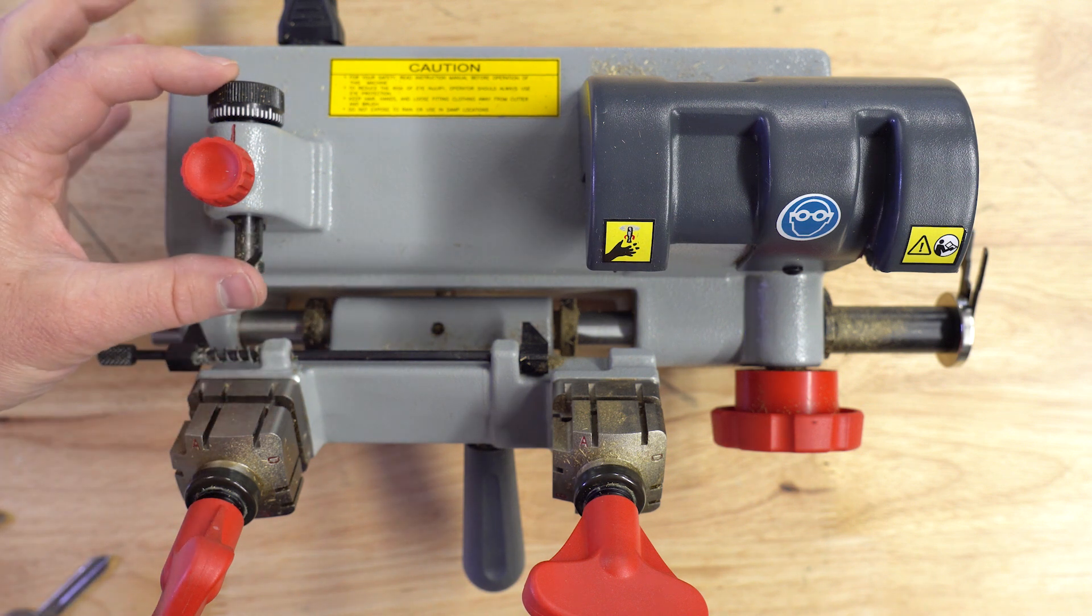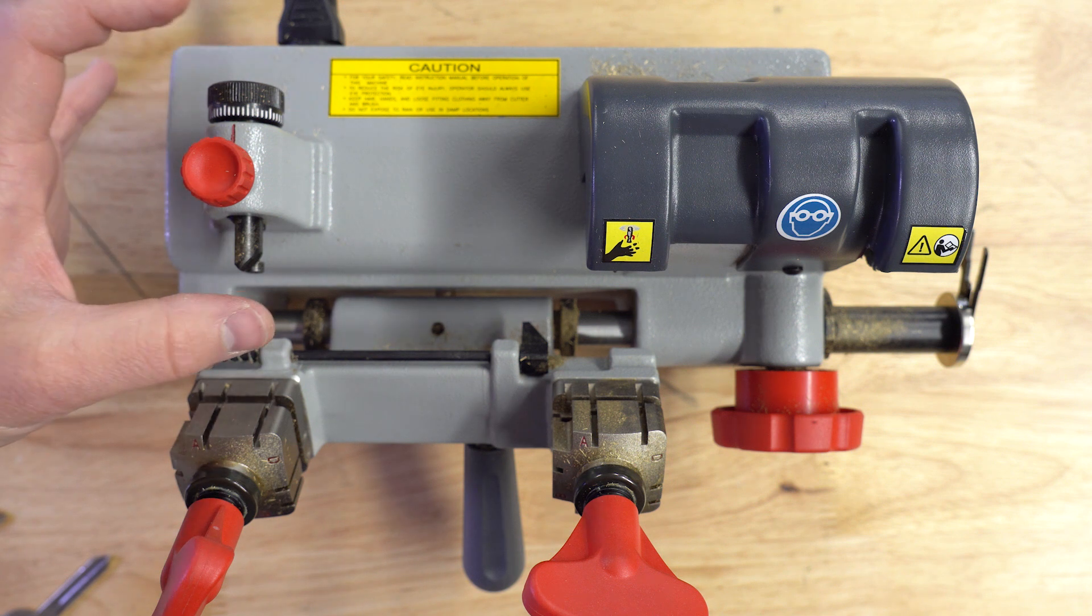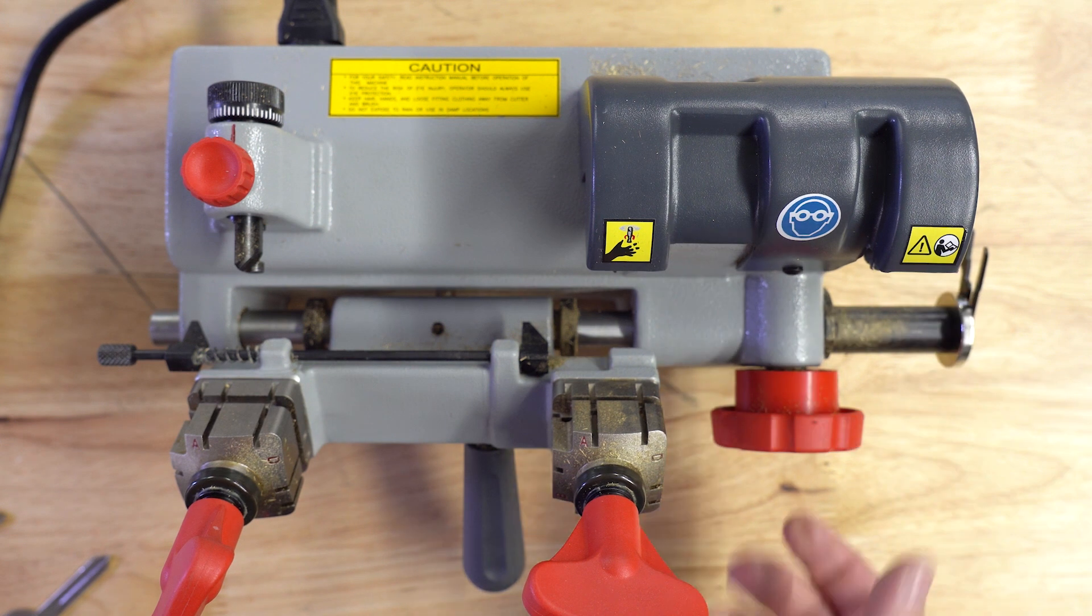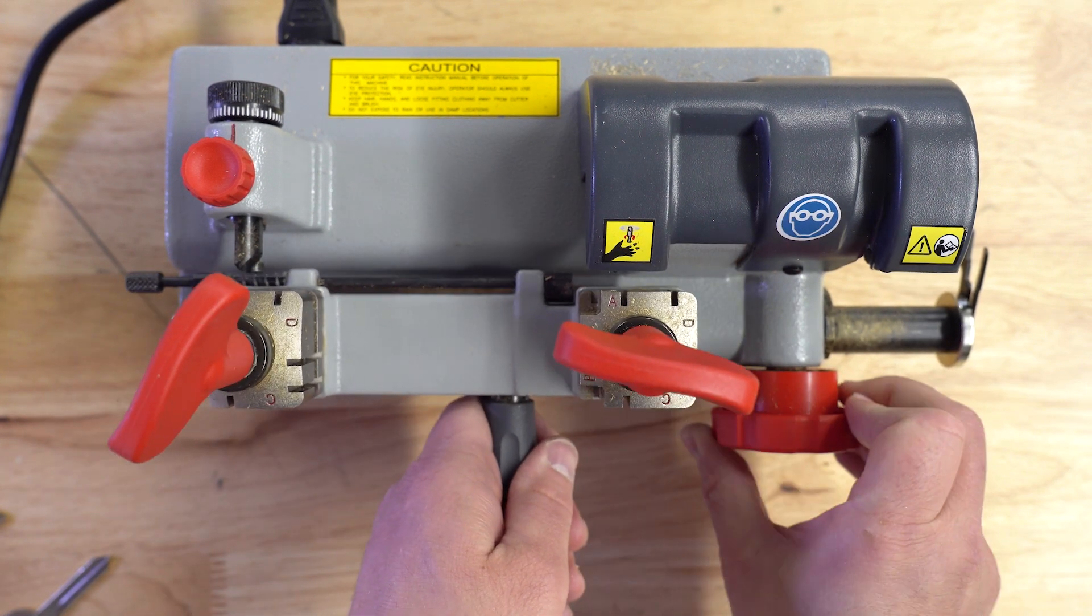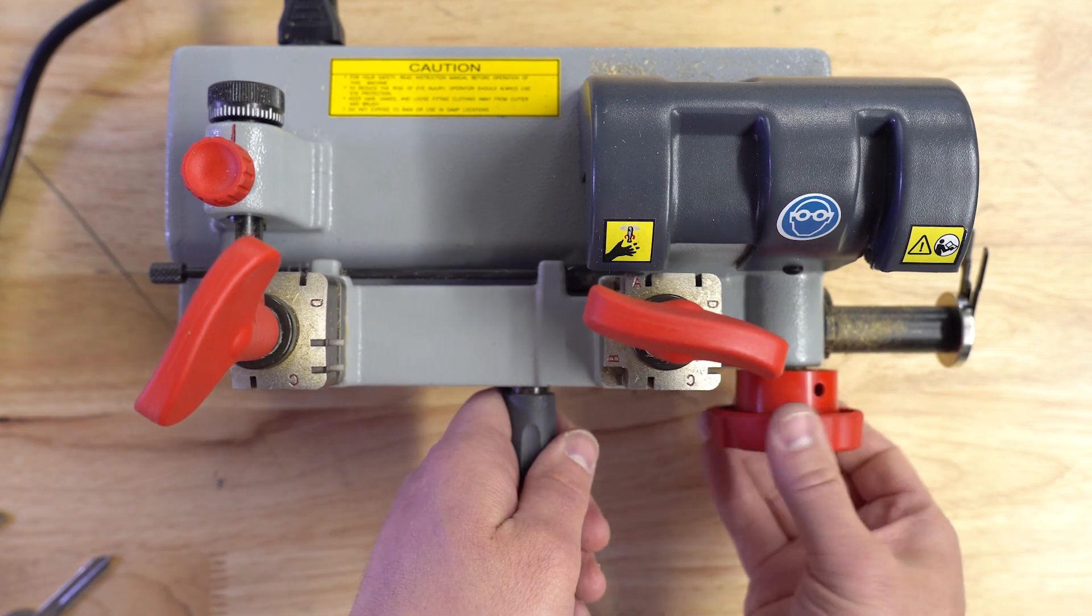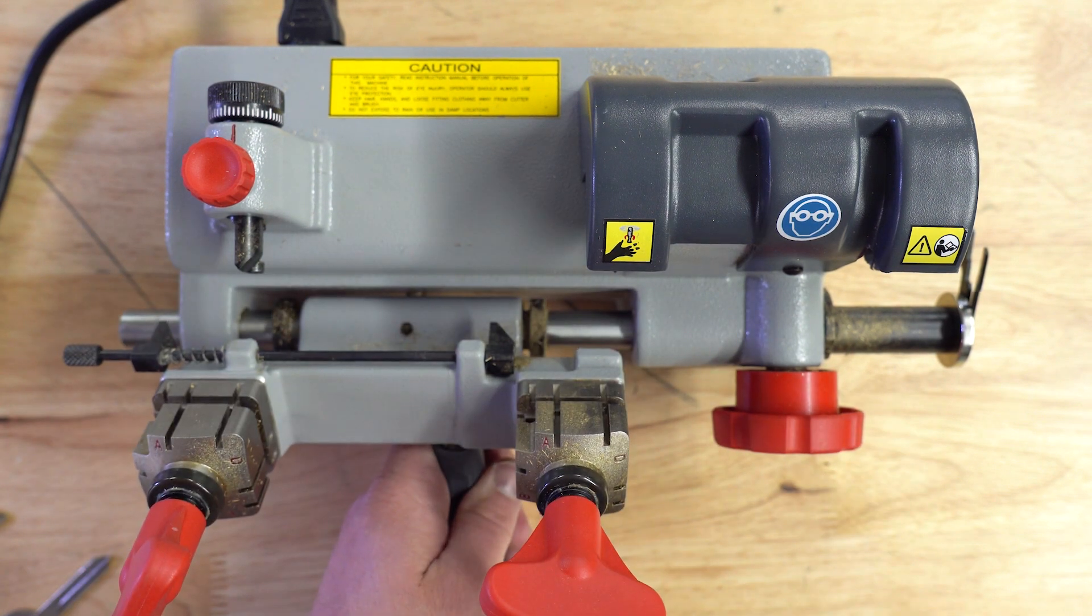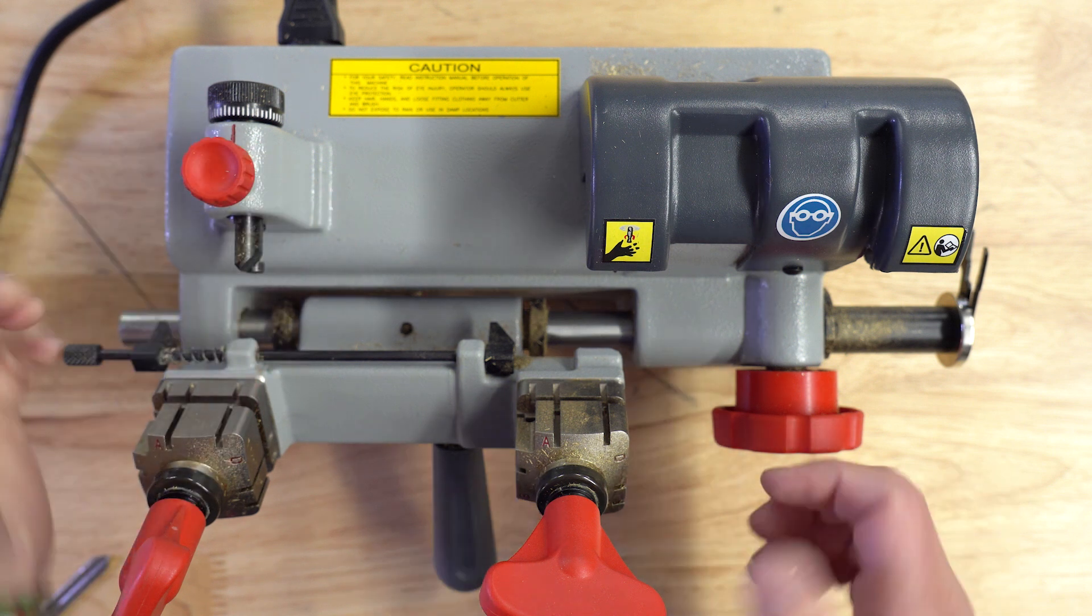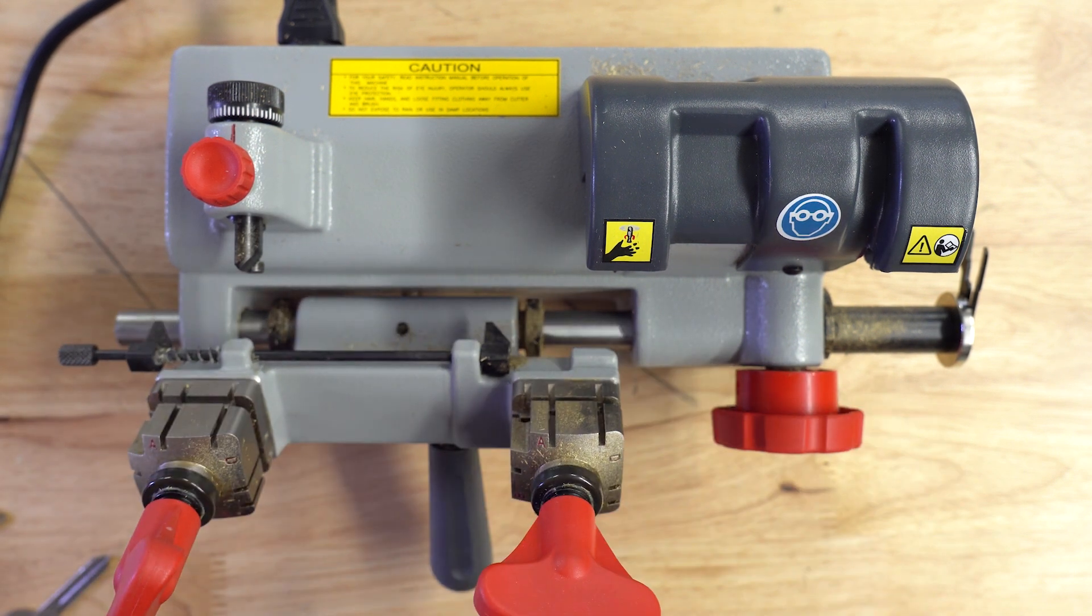Now, it also has a micro adjuster, which is really handy when you need to recalibrate the machine. It also has a buffer wheel right here. This turn knob makes it real convenient when you're cutting a key. All you have to do is hold the jaw up like this and move this wheel back and forth. It's kind of like a semi-automatic in a way. Instead of having a lever that you would move back and forth, it has this nice little wheel, which is real convenient.